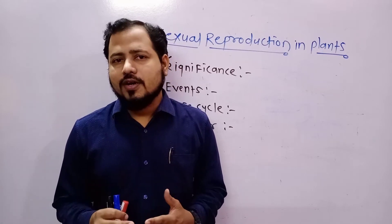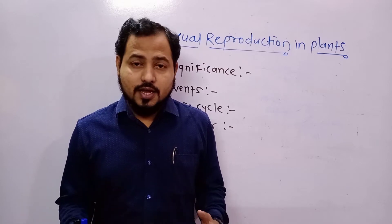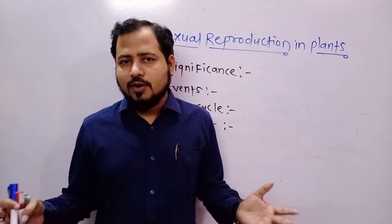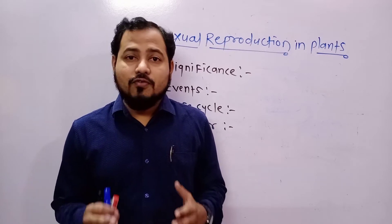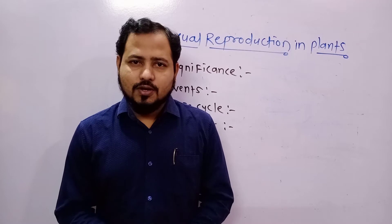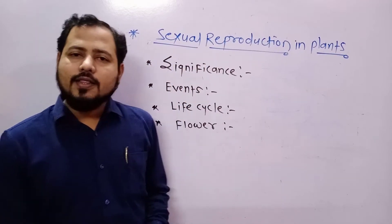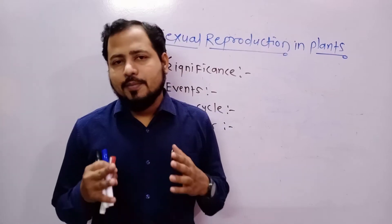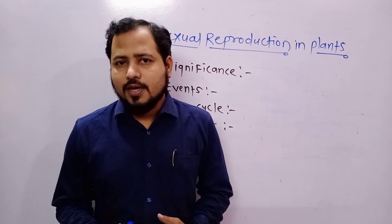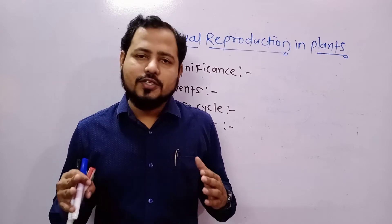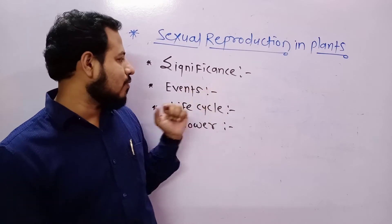That's how organisms tend to prefer sexual reproduction. For the sake of variations, the adjustment made by an organism with respect to surrounding changes is nothing but adaptation, which may lead to evolution of a species. That is the most significant view of sexual reproduction — it involves gametes, gametes bring variations, those variations help in adjustment with surrounding changes, and that may lead to evolution.